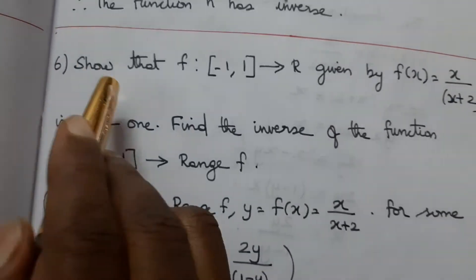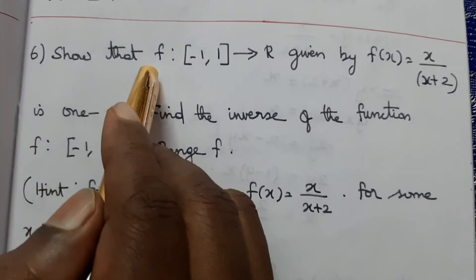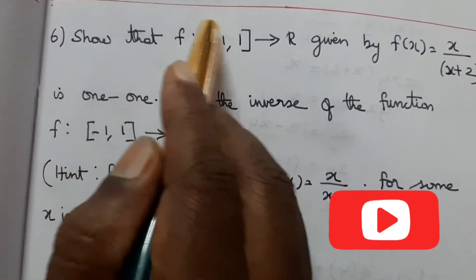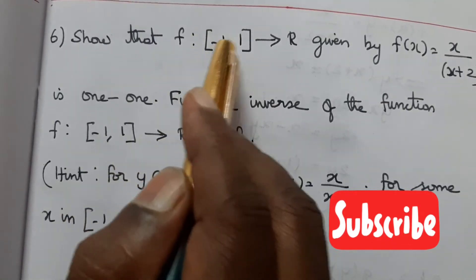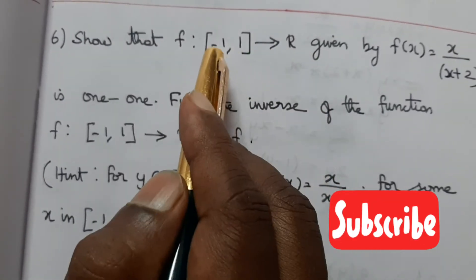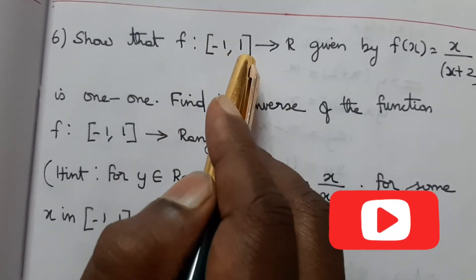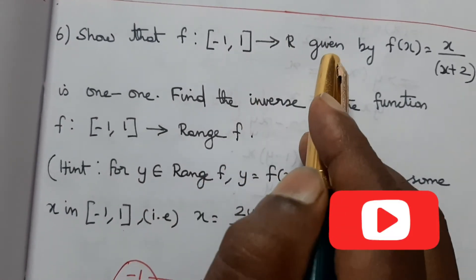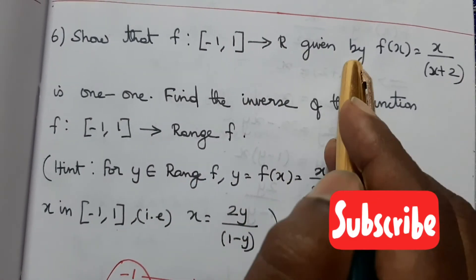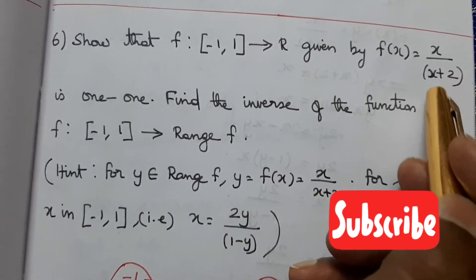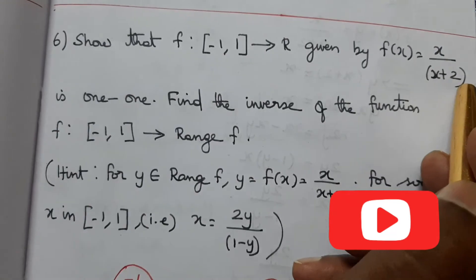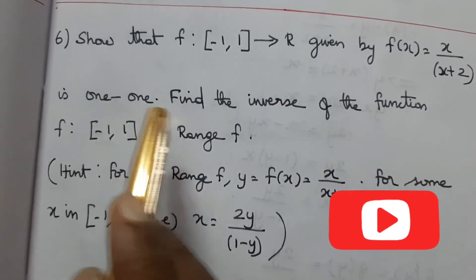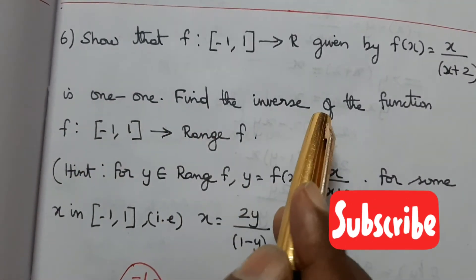Next problem: f from the interval minus 1 to 1 to the real numbers R, given by f of x equals x divided by x plus 2. Prove that it is one-to-one and onto, and find the inverse of the function.